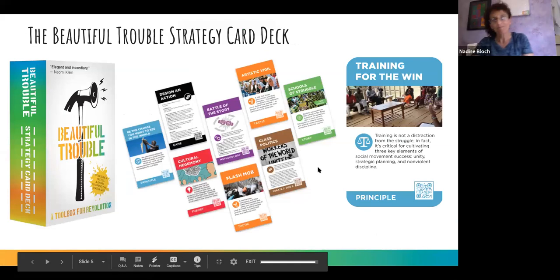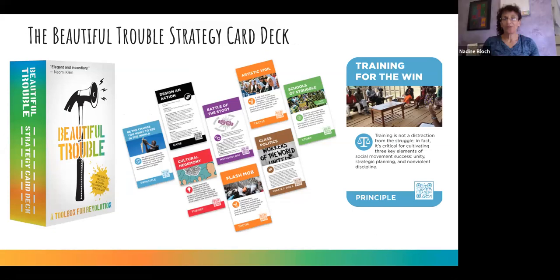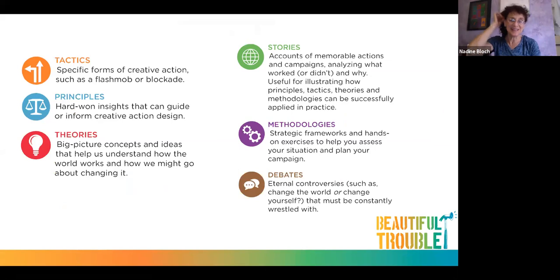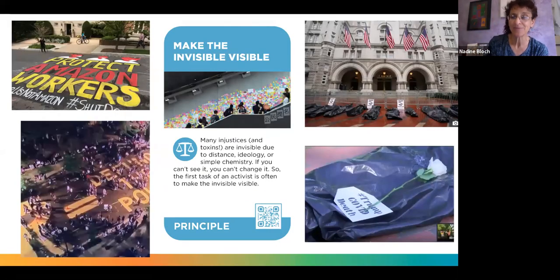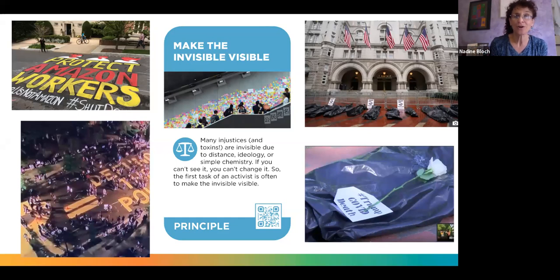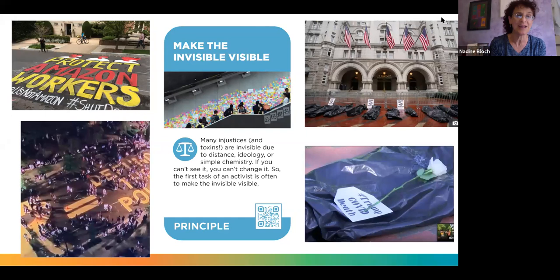Here's our strategy card deck. 'Make the Invisible Visible' — talking about a really basic principle as activists. Sometimes the thing we have to do first is make the problem recognizable to people who can't see it. On the left you'll see examples of two street murals: one about Amazon workers during COVID in front of Jeff Bezos's house in Washington DC, and another where the mayor of DC painted Black Lives Matter on 16th Street leading to the White House — but she was also funding the police to an increased amount.